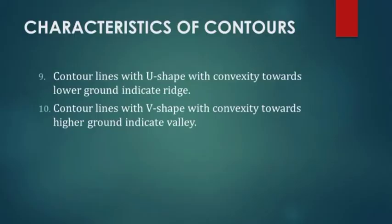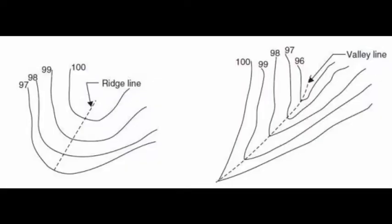Characteristics 9 and 10 can be tied together: contour lines with a U-shape with convexity towards lower ground indicates a ridge, and a convex V-shape with convexity towards higher ground indicates a valley. As you can see in the image, convexity towards the lower side will be a ridge and the V-shape convexity towards the higher side will be a valley.